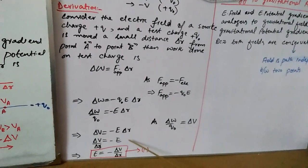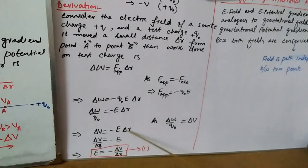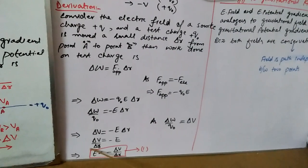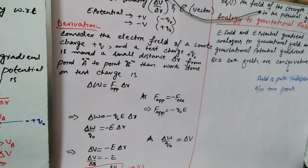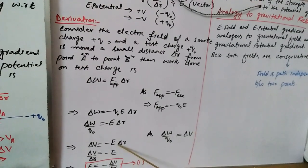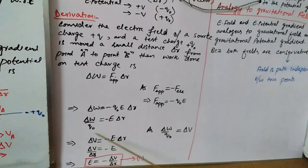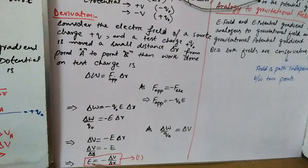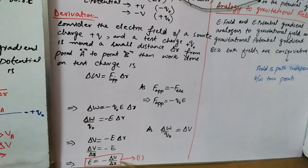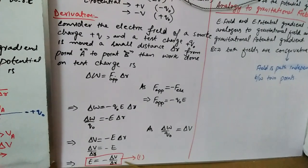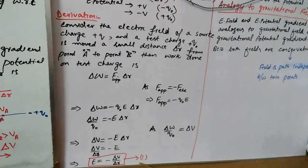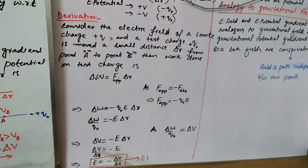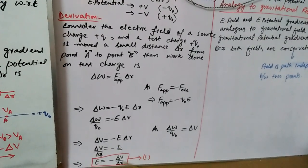By moving Δr to the other side, we get ΔV/Δr = −E. Swapping left and right hand sides gives E = −ΔV/Δr. This is Equation 1, which is our required equation representing the relationship between electric field and potential gradient.